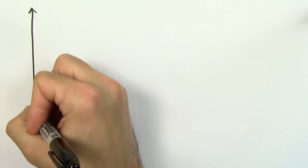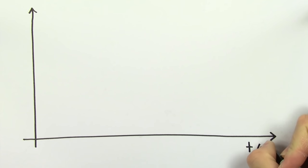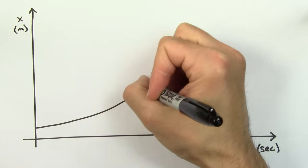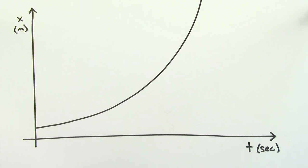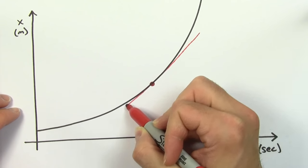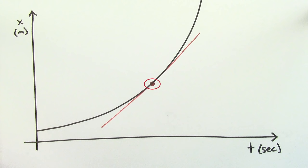If your velocity is changing, one way you can find the instantaneous velocity is by looking at the motion on an x versus t graph. The slope at any particular point on this position versus time graph is going to equal the instantaneous velocity at that point in time.